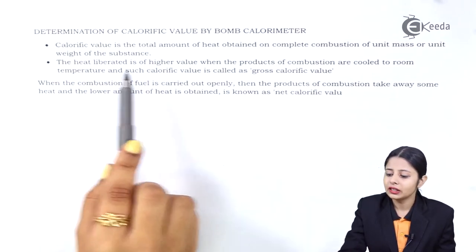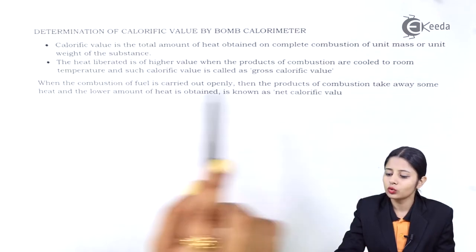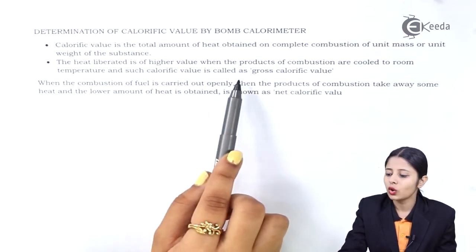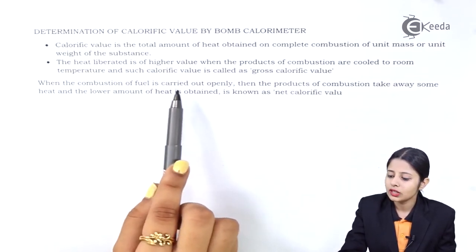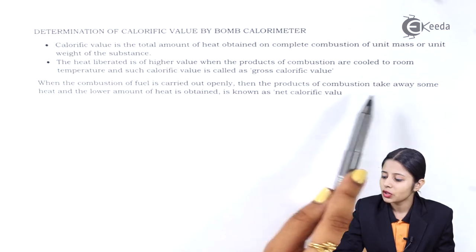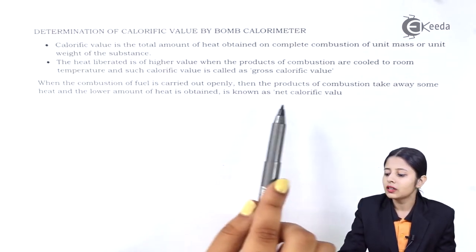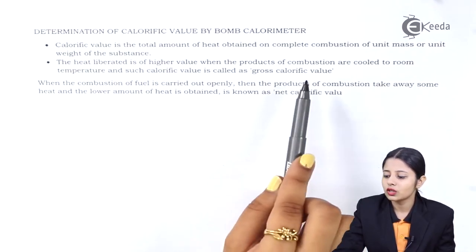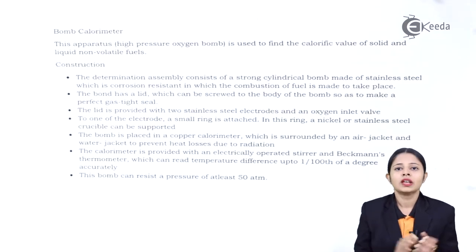The heat liberated is of higher value when the products of combustion are cooled down to room temperature, and such calorific value is then called the gross calorific value. When the combustion of fuel is carried out openly, the products of combustion will take away some heat and a lower amount of heat is obtained — this is known as the net calorific value. So there are two types of calorific values: the gross calorific value and the net calorific value.